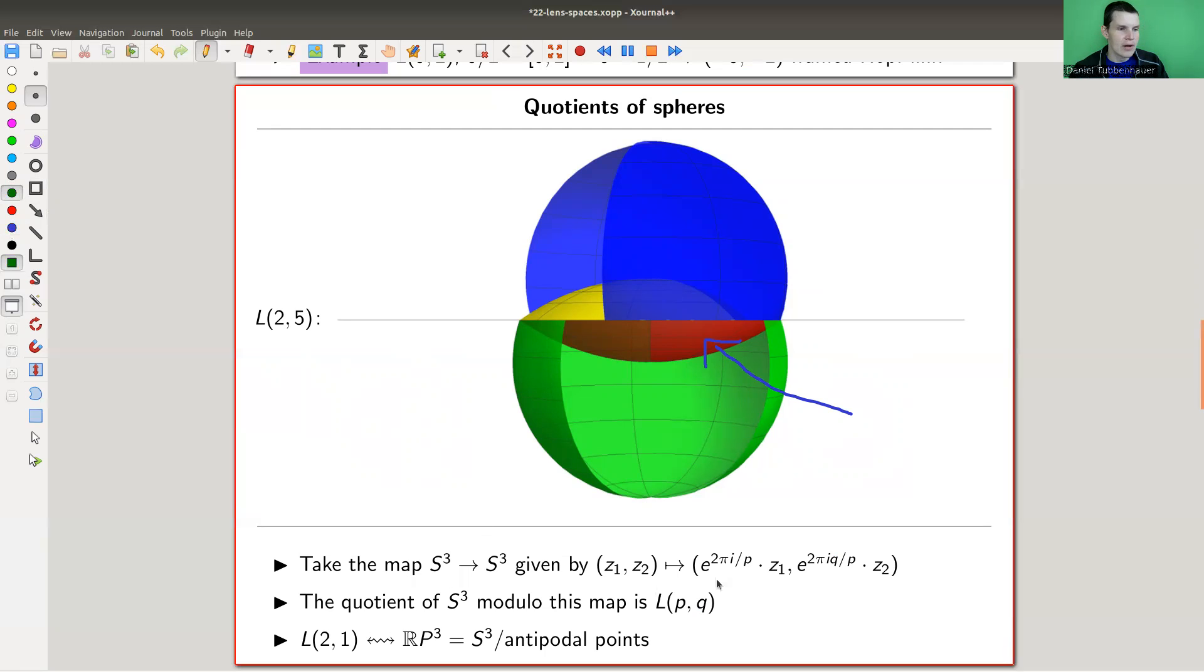It was originally defined as a quotient of S³. z1 and z2 are the coordinates of S³ in complex four space. Those numbers essentially turn the sphere in a specific manner very similar to this one, and you take the quotient. That was the original definition of the lens spaces. As a particular example, for p equals two and q equals one, this would be RP³.